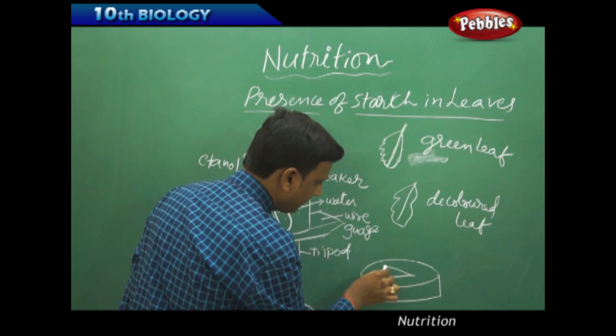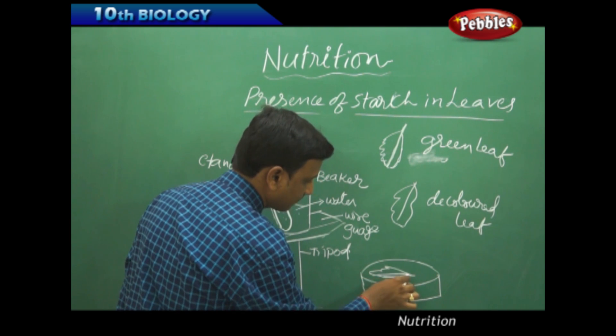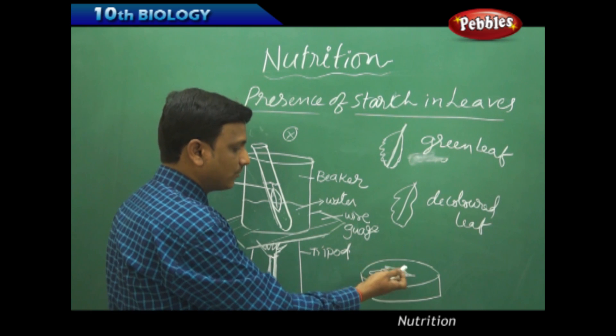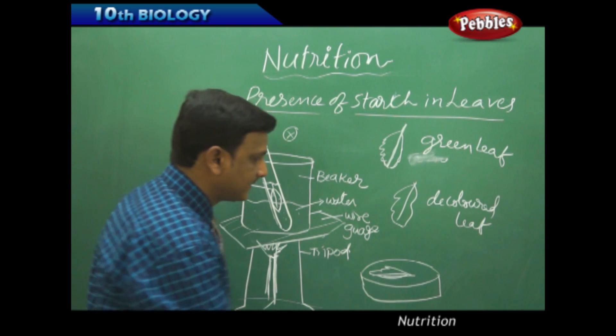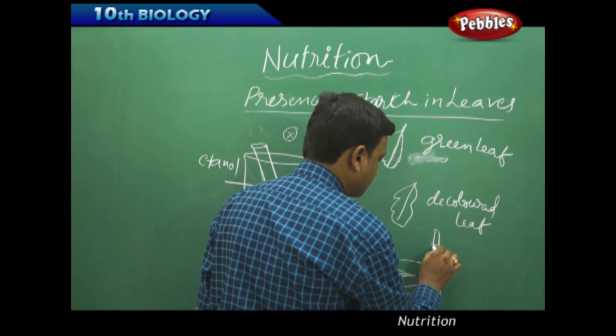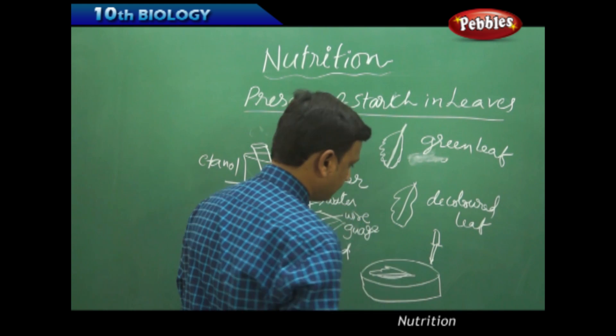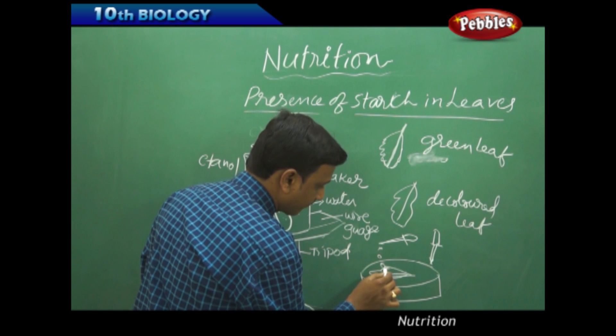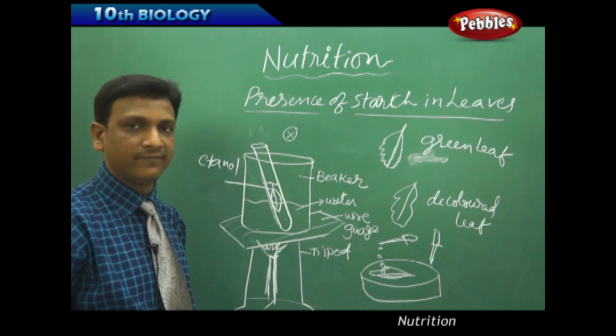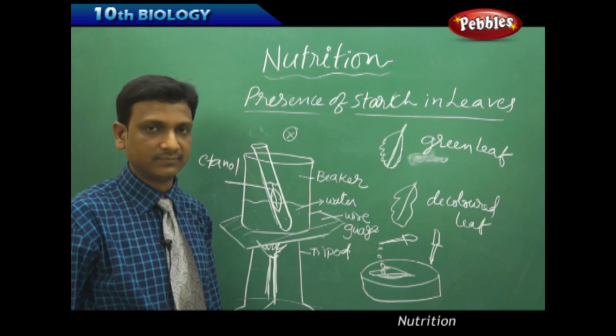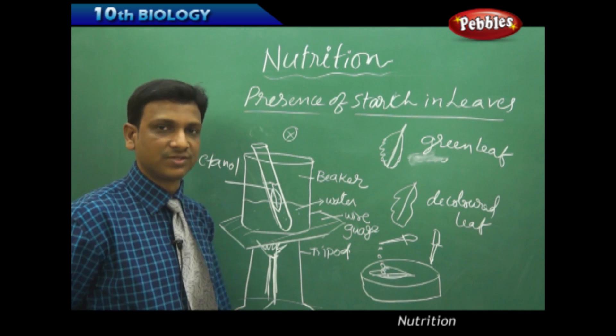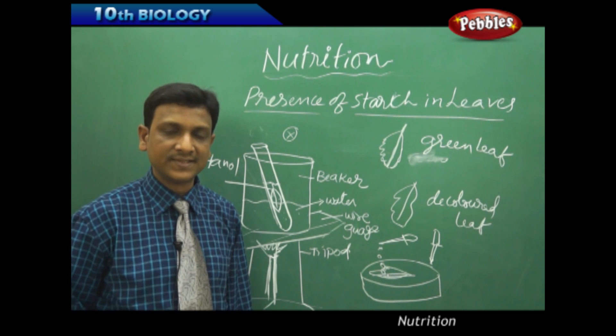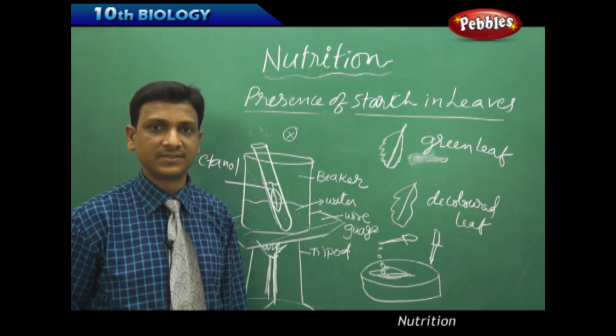This decolored leaf is placed in a petri dish. We can add some water to remove the alcohol. Then add few drops of iodine. If you add few drops of iodine, the leaf turns dark blue in color. So it indicates the presence of starch. By this experiment, we can prove that starch is present in green leaves.